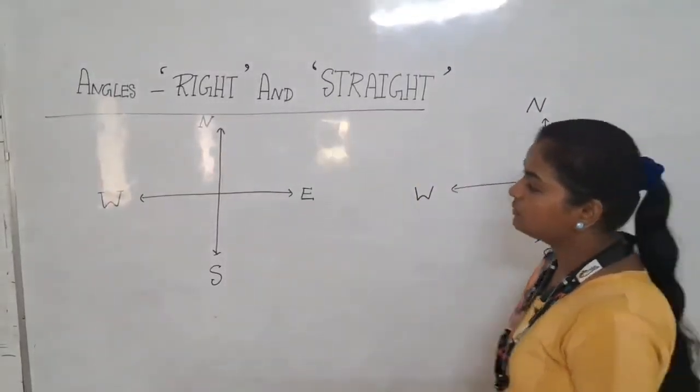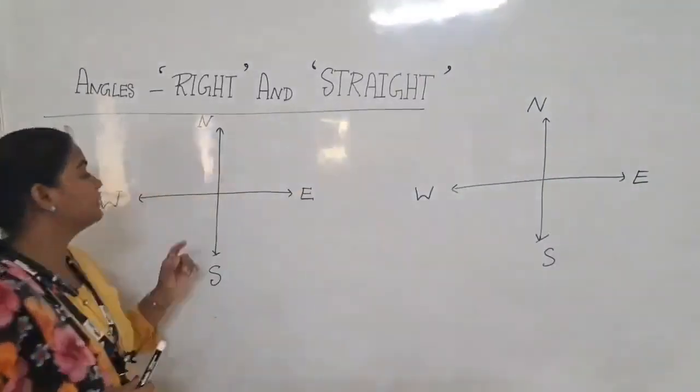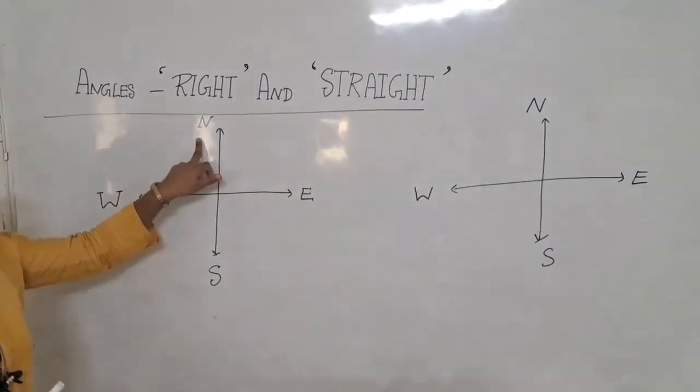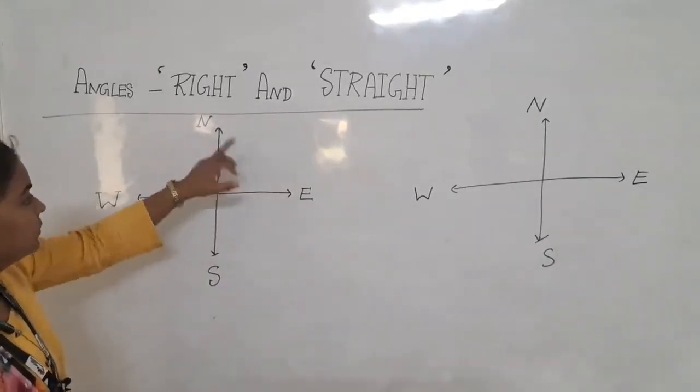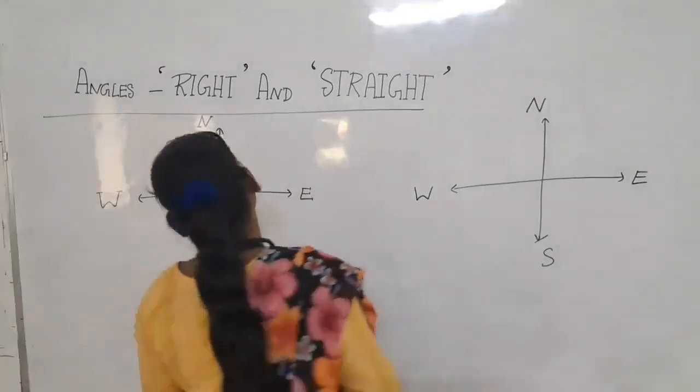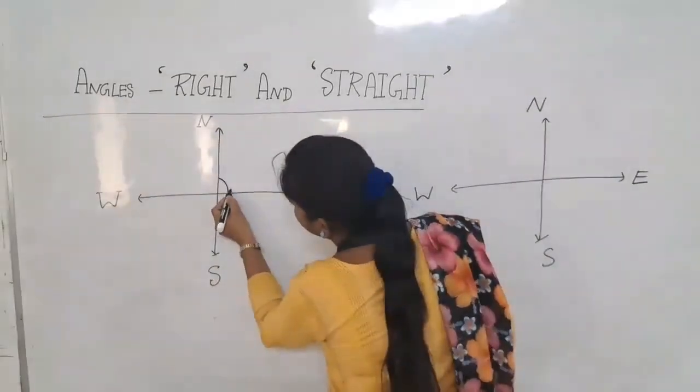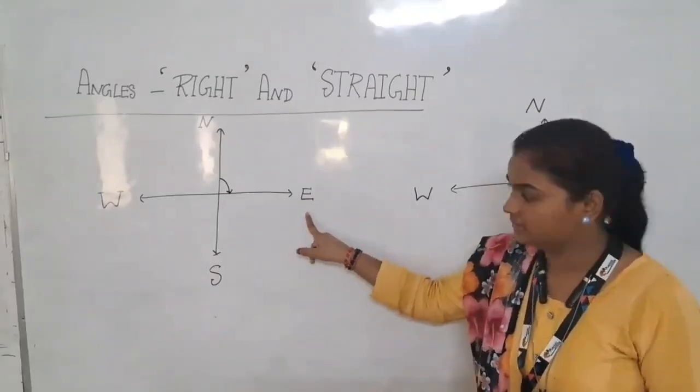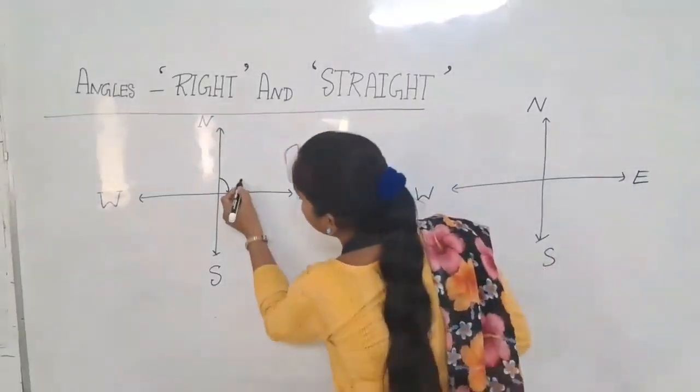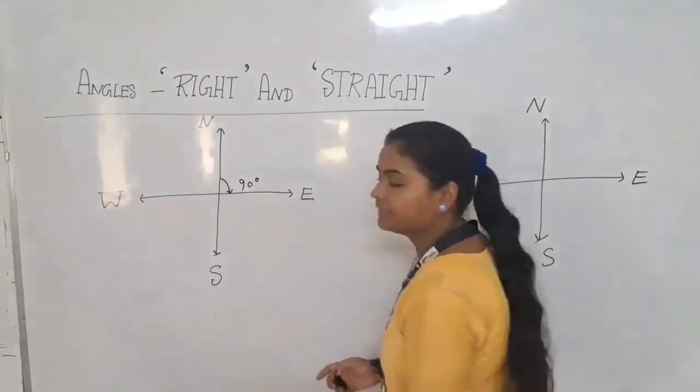Suppose one person is standing facing north and turns clockwise from north to east. He has done one right angle. It is a right angle.